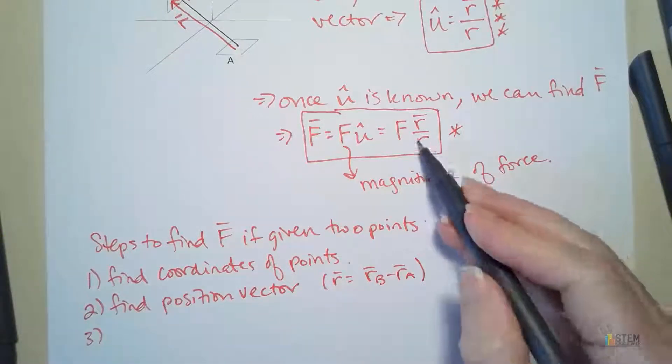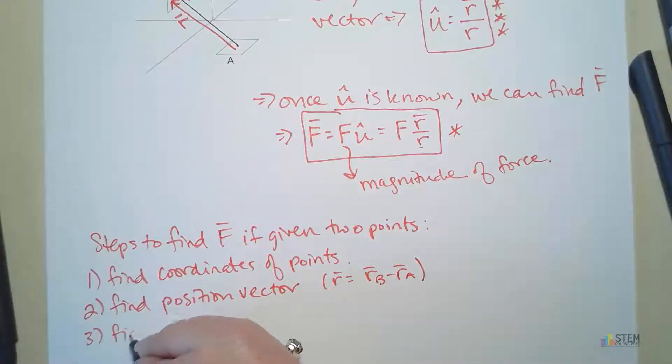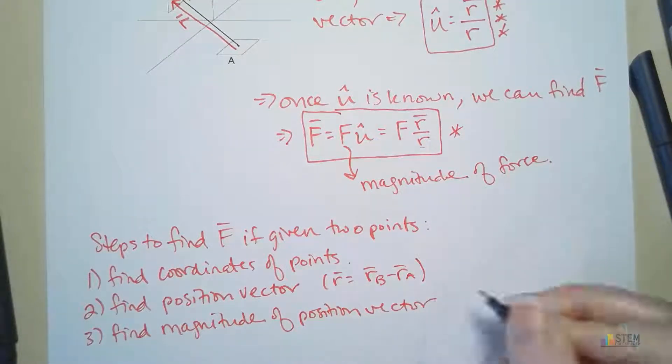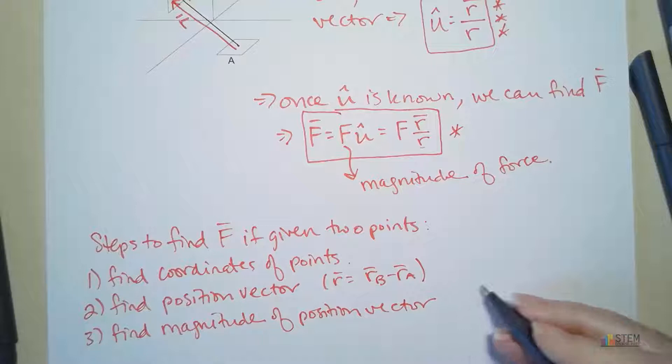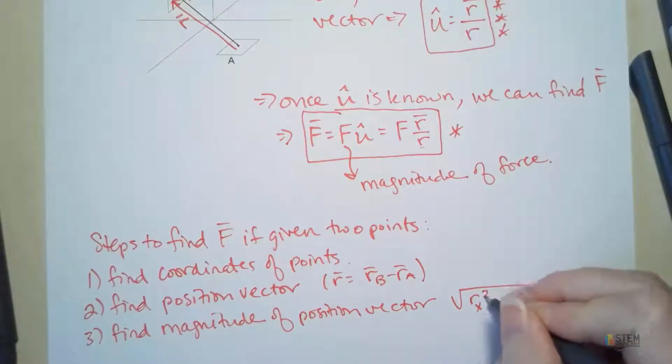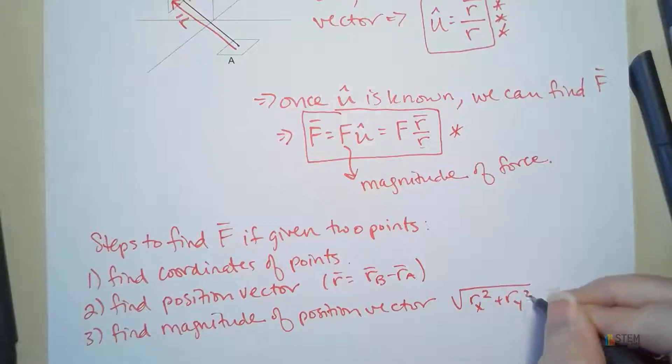Next, you'll find the magnitude of that position vector. Okay, so that's where you take the square root of the sum of the squares. So that.